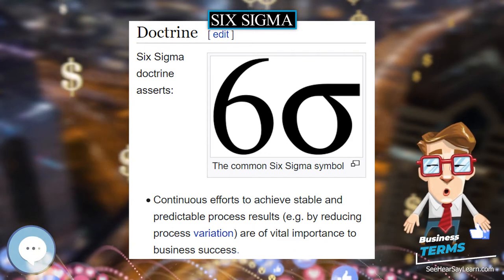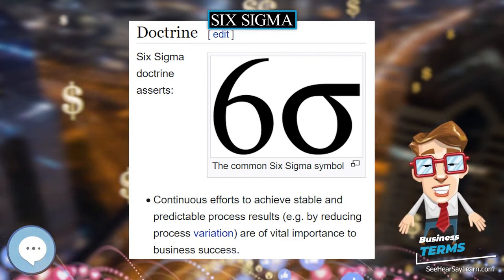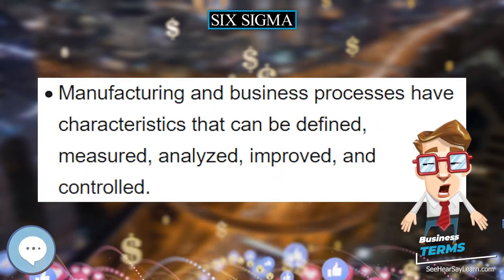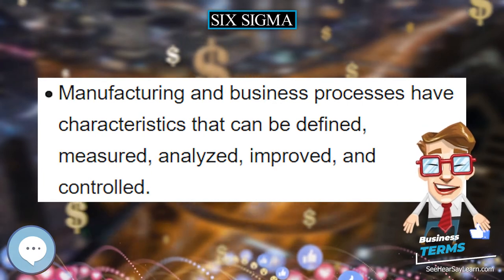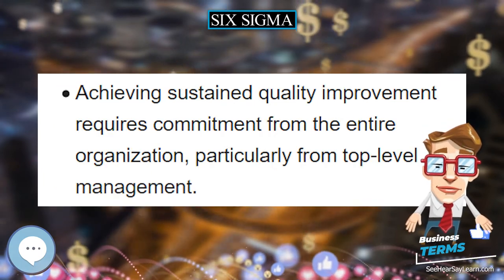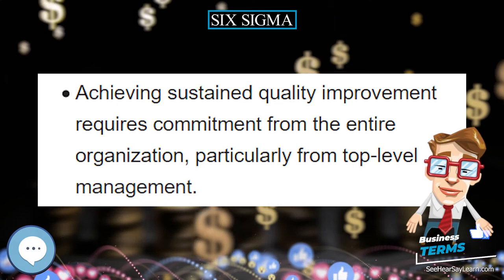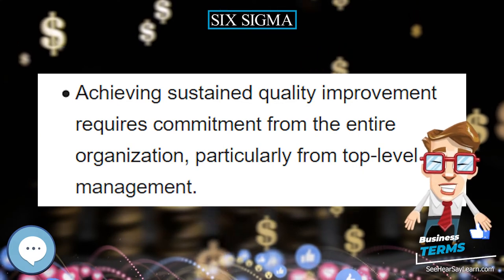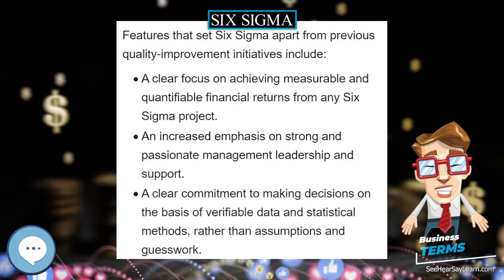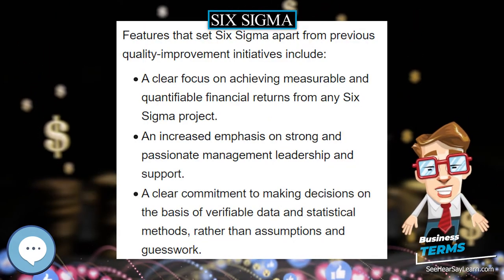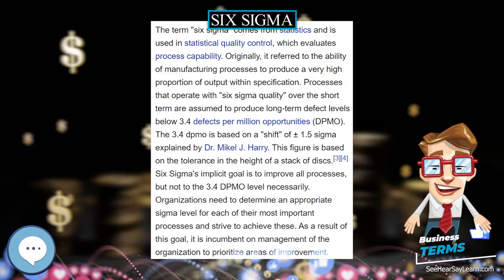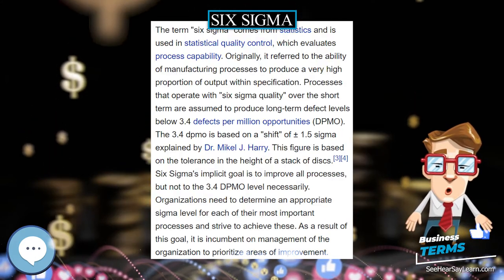Some organizations use additional belt colors, such as yellow belts for employees that have basic training in Six Sigma tools and generally participate in projects, and white belts for those locally trained in the concepts but do not participate in the project team. Orange belts are also mentioned for special cases.